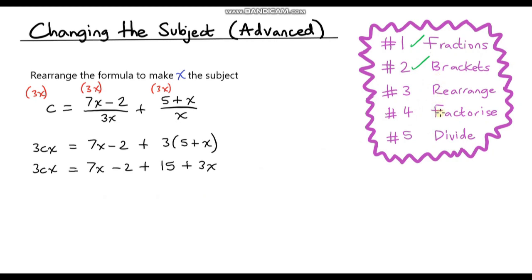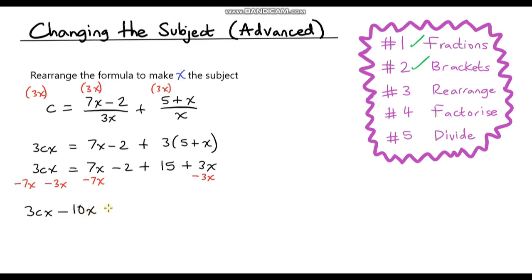Now we need to rearrange the formula to get all of the x's on one side. I'm going to put all the x's on the left hand side and leave the numbers on the right. So I'll subtract 7x from both sides, and in the same step subtract 3x from both sides as well. On the left hand side we've got 3cx minus 7x minus 3x, which is 3cx minus 10x. On the right hand side we've got minus 2 plus 15, which is just 13.